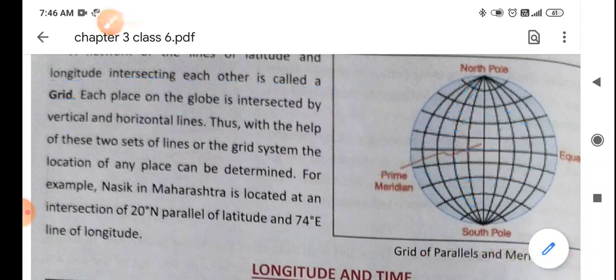With the help of these two sets of line, the grid system, the location of a place can be determined. With the grid system we can tell the location of any area, any country, any place.